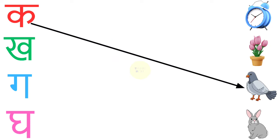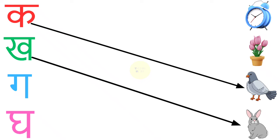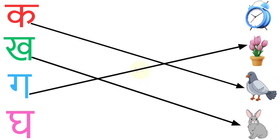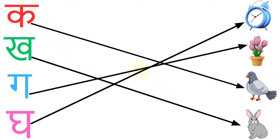Kaf say Kabutar. Kha say Kharkosh. Ga say Gamla. Gha say Ghaadi.